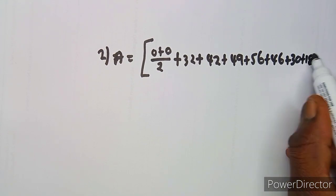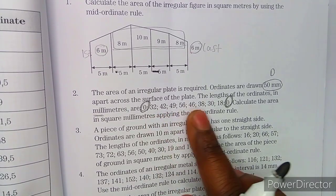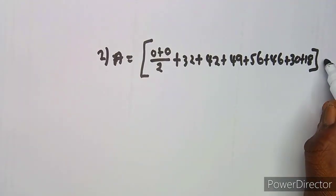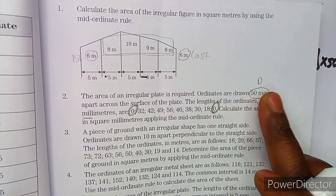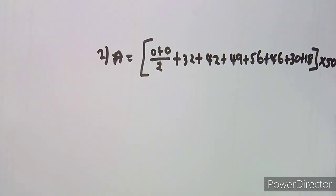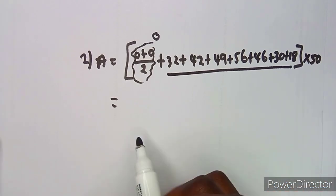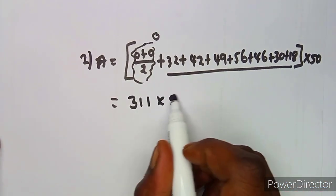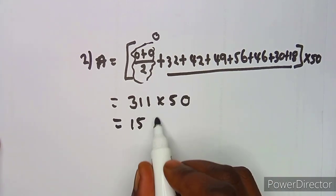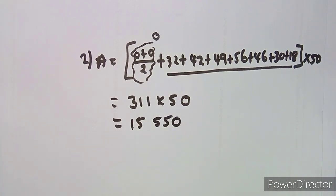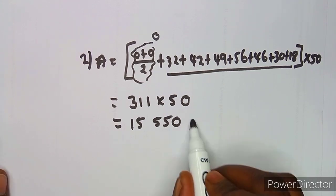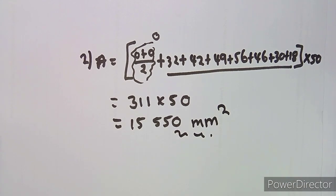Add every number there — make sure you don't skip any — then multiply by 50, which is the distance between the ordinates. The zero term contributes nothing. Adding all the remaining ordinates gives 311, times 50, which gives us 15,550 square millimeters.